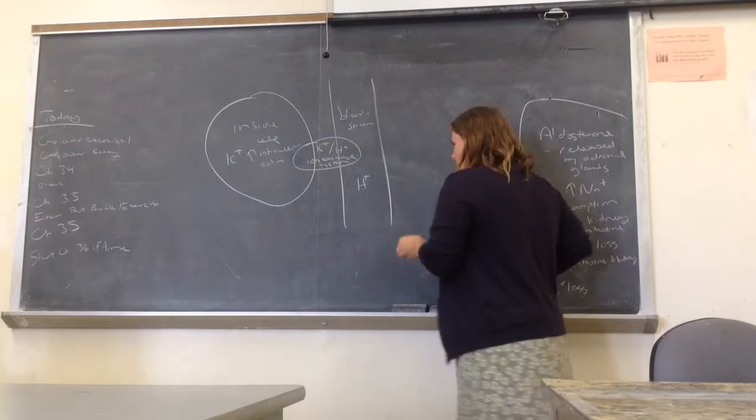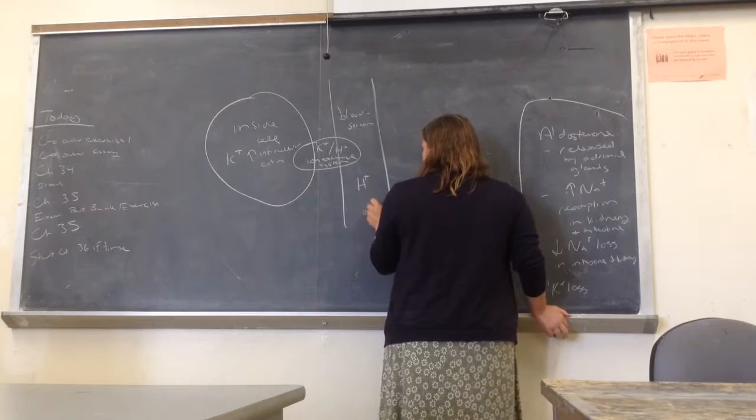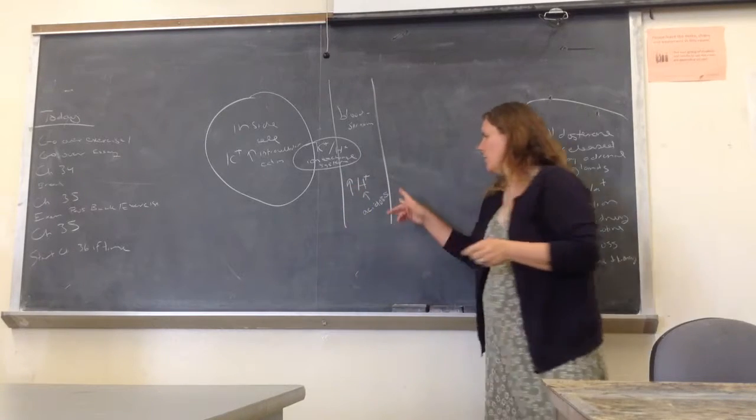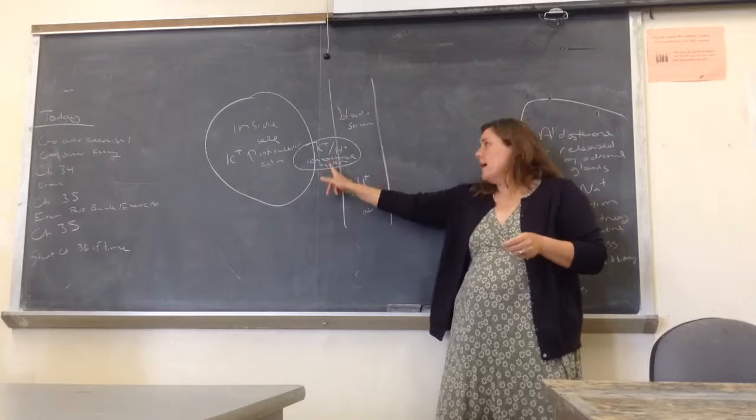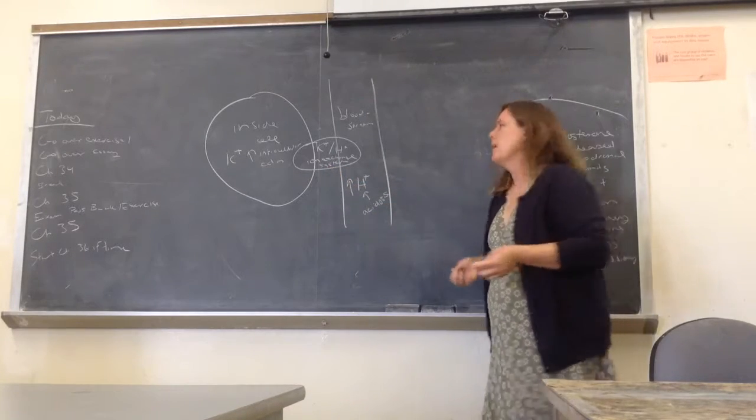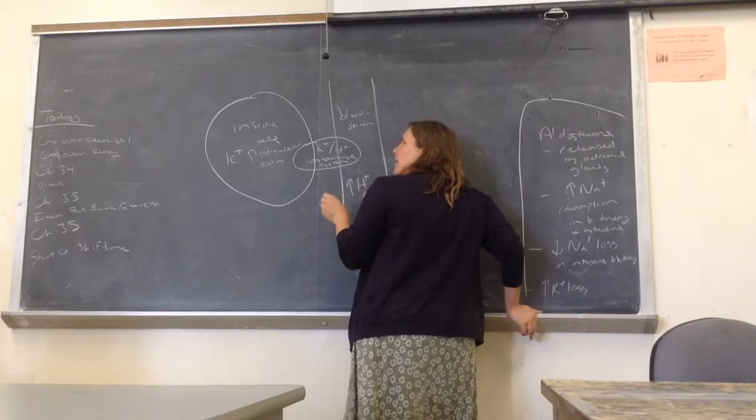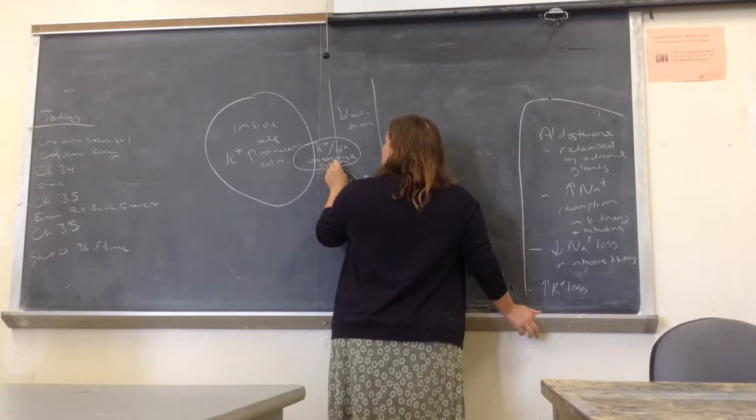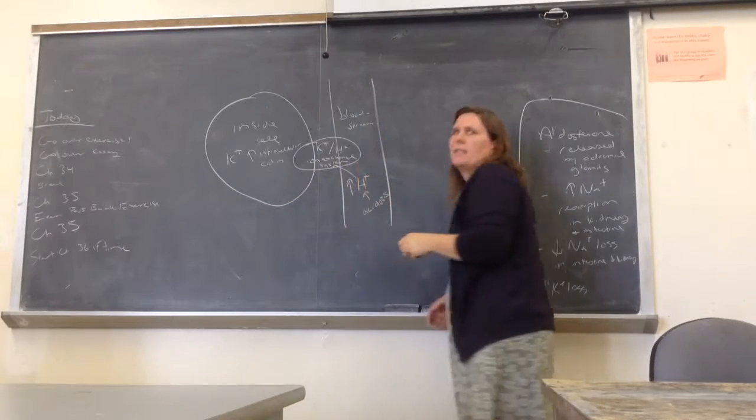So if we end up in metabolic acidosis, an increase in hydrogen, that's acidosis. Because we have a sodium-potassium exchange pump, we have the ability, within limits, to send hydrogen into this cell in exchange for potassium.